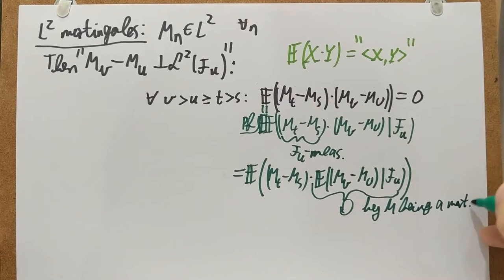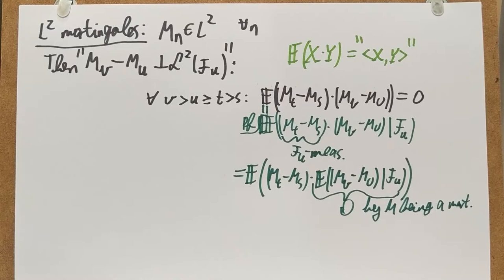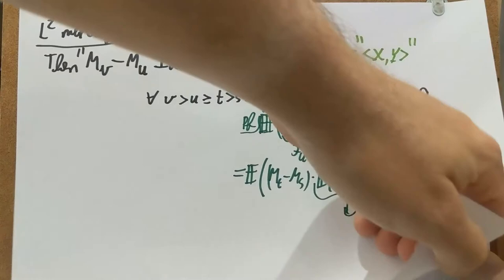Notice I'm not talking about super- or sub-martingales here — these are martingales. So we have this orthogonality relation, and that implies a nice theorem. Part of the theorem will be called the Pythagorean theorem.